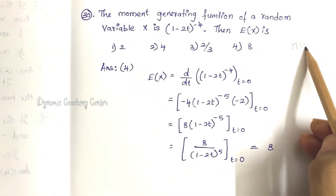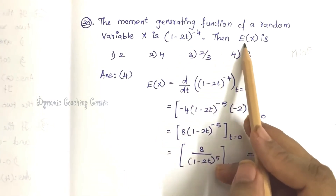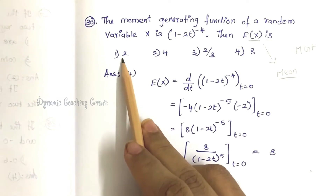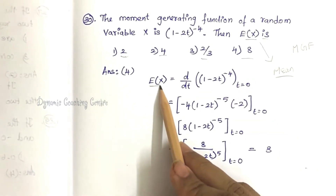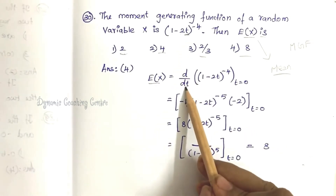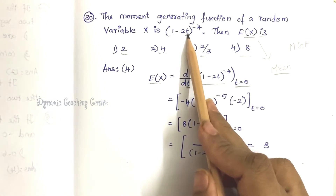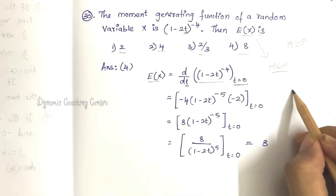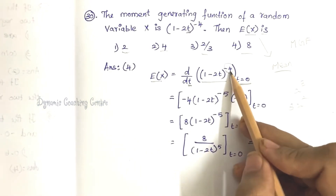Next question on the Moment Generating Function (MGF). The moment generating function of a random variable x is given by (1 minus 2t) to the power minus 4. Find E(x). Options: 1, 2, 2 by 3, and 8. To find E(x), differentiate the MGF once and substitute t = 0. Using general differentiation — for example, derivative of x³ is 3x² — we differentiate using the chain rule with the minus 4 exponent to get the final answer.